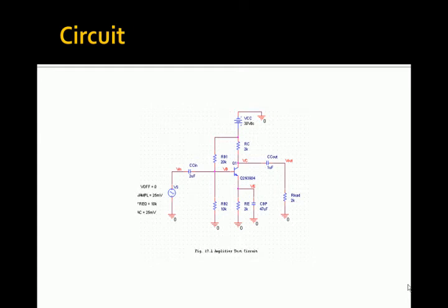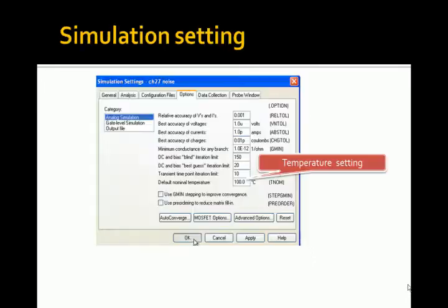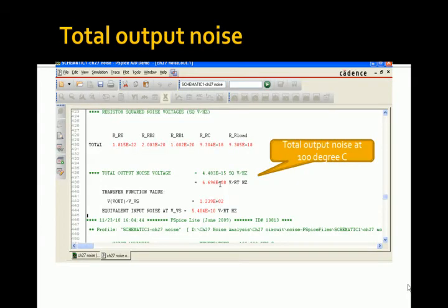In the following diagram we have an amplifier test circuit. The input is given to a voltage divider, then it goes to the base of the amplifier. This is an analog simulation done at a temperature setting of 100 degrees Celsius. We got harmonic distortion of 6.69.